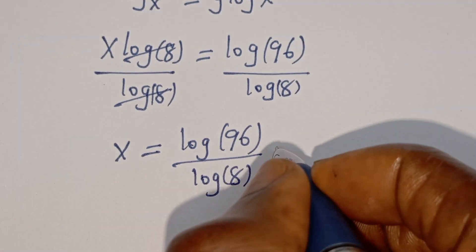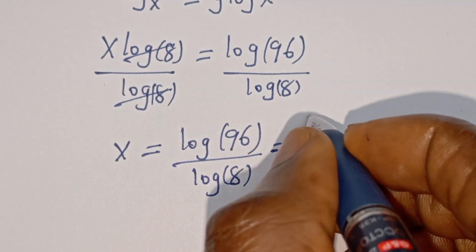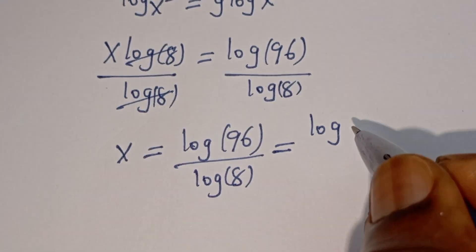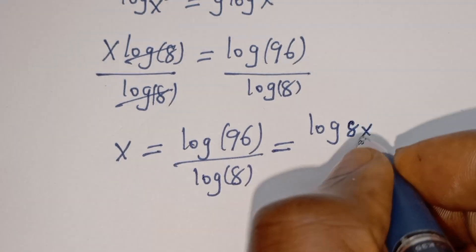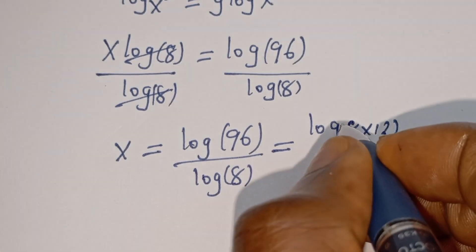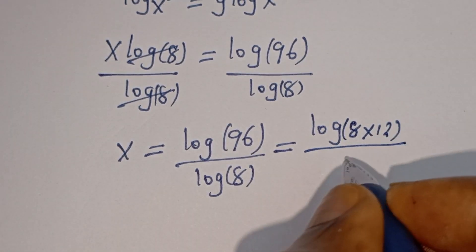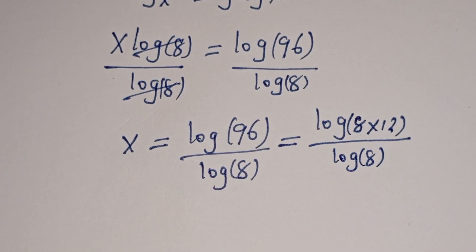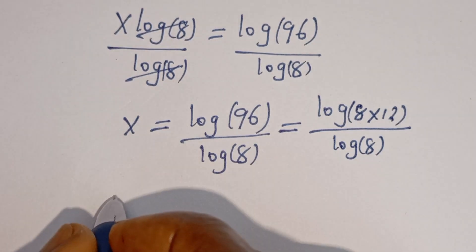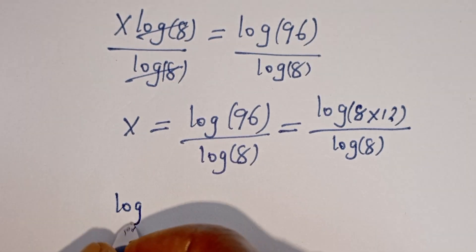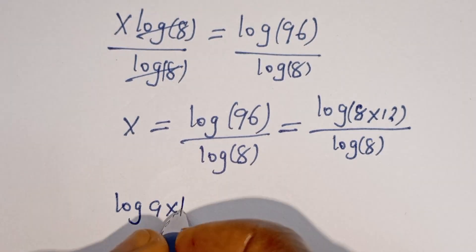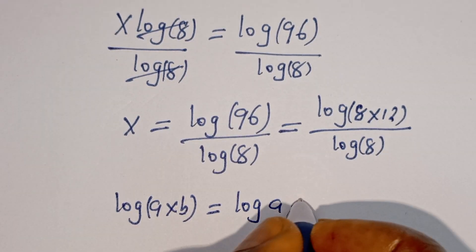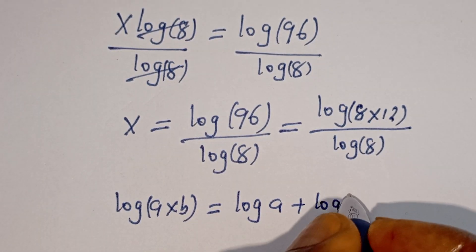Now log 96 can be written as log of h multiplied by 12, divided by log h. Take note that if you have log a multiplied by b, this is equal to log a plus log b.